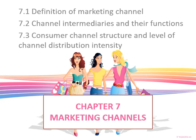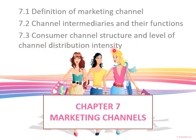Today we're going to learn Chapter 7 on marketing channels. This is the second P in your marketing mix. The first P on product was covered in Chapters 5 and 6, and Chapters 7 and 8 will cover the second P, which is place. In Chapter 7 we'll learn three things: first, to define the marketing channel; second, to look into channel intermediaries and their functions; and lastly, the consumer channel structure and level of distribution intensity.